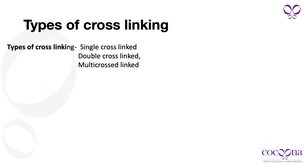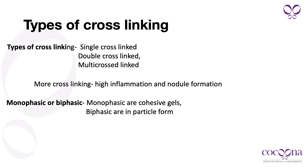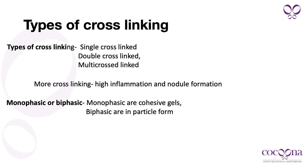Cross-linking reduces enzymatic degradation of hyaluronic acid and also increases cohesivity of gel. Cross-linking can be single, double, or multi. But remember: more cross-linking also increases the risk of inflammation, granuloma formation, and nodule formation. If you use double or multi-cross-linking, you need to understand how much to inject and where to inject. Fillers can also be monophasic — with uniform gel particles — or biphasic, which has varying particle sizes, and we'll see the implications of each later.